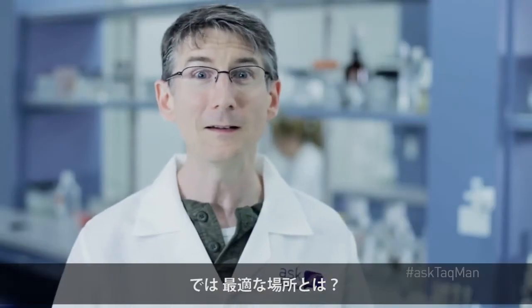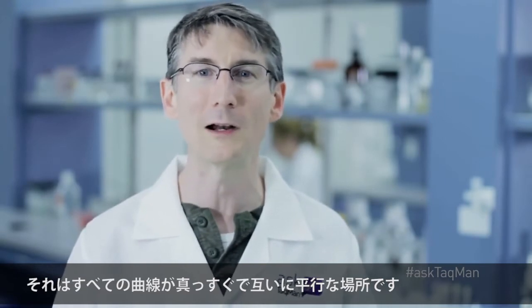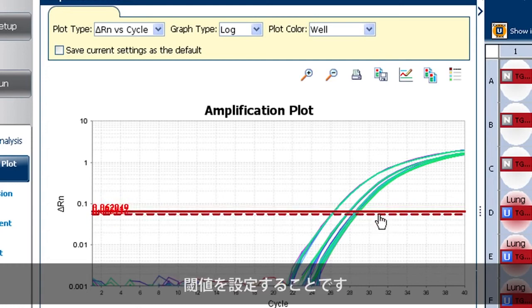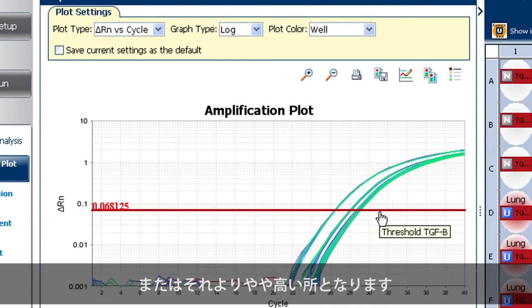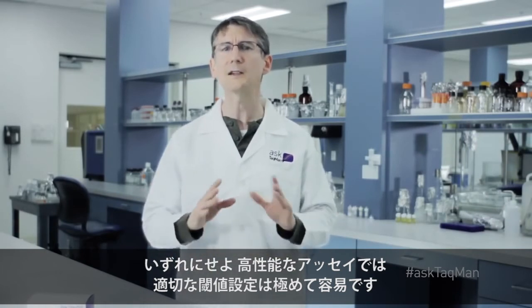A happy spot? Some place where all of our curves are straight and parallel to one another. What we really want is to put the threshold wherever the precision of our replicates is highest. That's generally somewhere toward the middle of the geometric phase, or maybe slightly higher. In any case, with a really robust assay, hitting a good spot is quite easy.